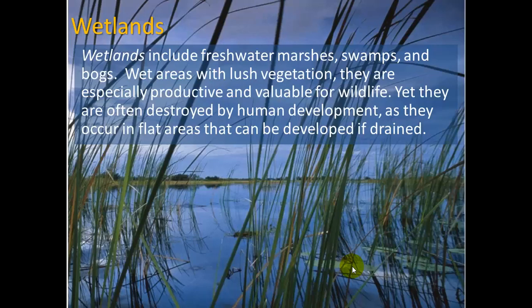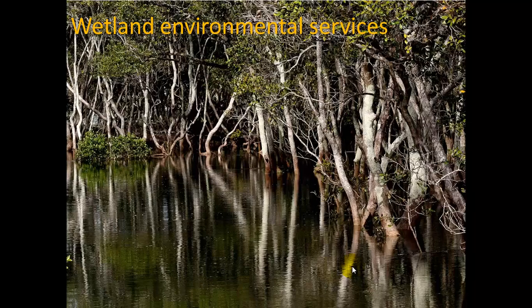Let's do a little review of wetlands. Wetlands include freshwater marshes, swamps, and bogs — wet areas with lush vegetation that are especially productive and valuable for wildlife. Yet they are often destroyed by human development, as they occur in flat areas that can be developed if drained, which we've done a lot in the past 100 years. We are only now beginning to go back and restore some of those wetlands — for example, Ohio is restoring some of its wetlands.